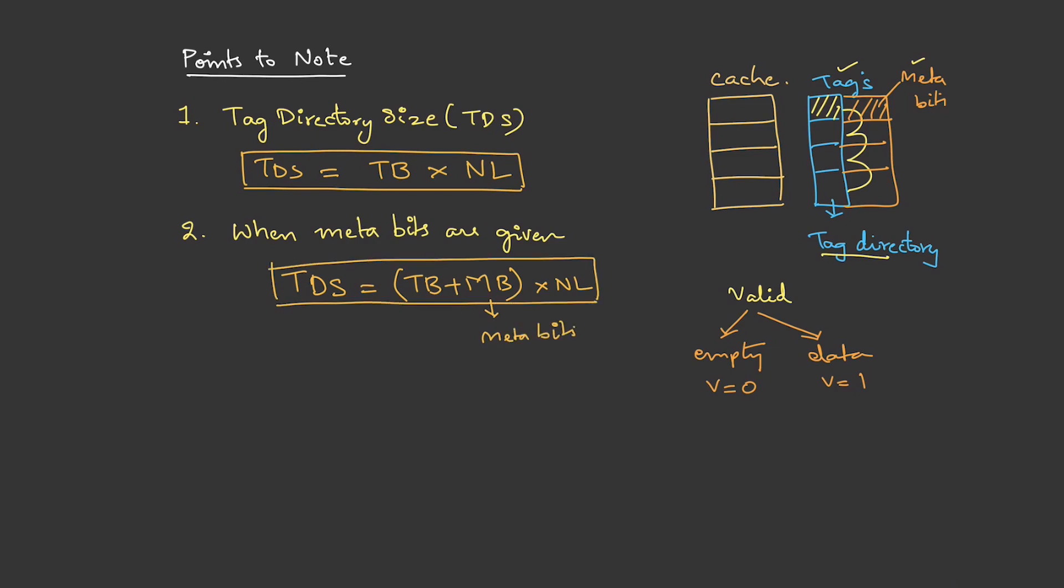Next, for direct mapping, one comparator is sufficient because we don't really search. We already know the line number, we can just go there, use one comparator and compare the tag bits. What about the size? The size is same as tag bit size. So if we have two tag bits, the comparator size is two bits. If it is four bits, comparator size is four bits.